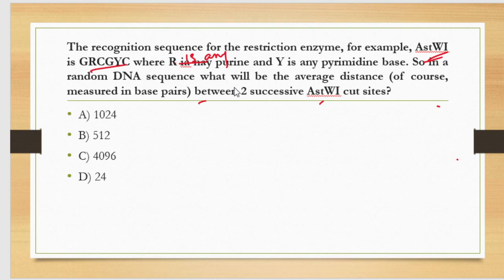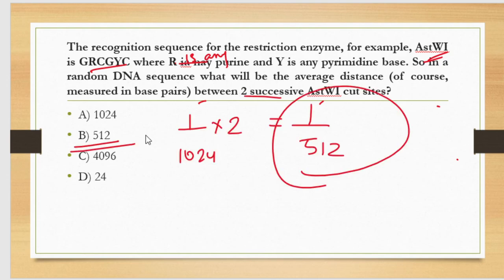I hope this was clear to everyone. If not, you can ask me in the comment section. This was a little tricky because the options also have 1024, so the moment you multiply and get 1024, it's highly possible you're going to select that answer. But keep in mind they are asking between two successive cut sites, and we are talking about double-stranded DNA.